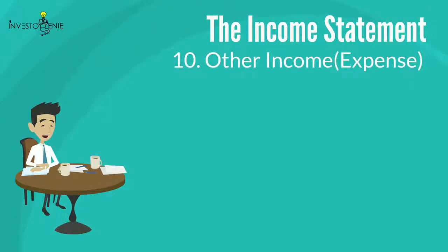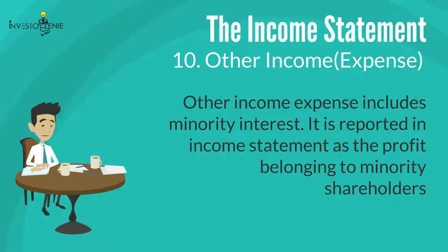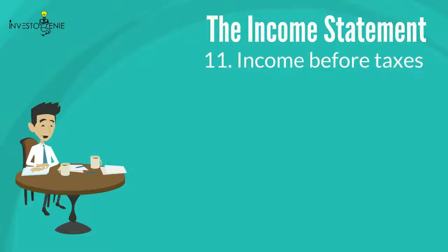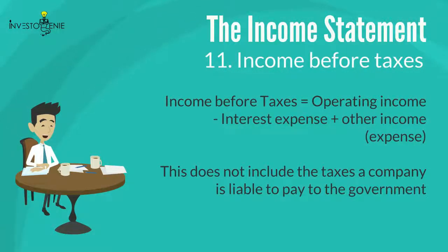Ten: other income/expense includes minority interest. It is reported in the income statement as the profit belonging to minority shareholders. The minority interest will be discussed further in the balance sheet statement. Eleven: income before taxes is calculated after deducting interest expenses and adding any other income or expense from the operating income. This does not include the taxes a company is liable to pay to the government.